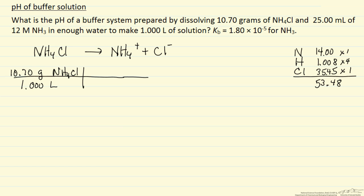So 53.48 grams of ammonium chloride for every mole of ammonium chloride, canceling units, this should give us the number of moles per liter. So that means 0.200 molar of ammonium ion in solution.